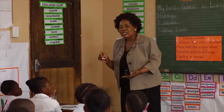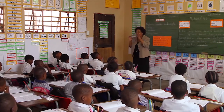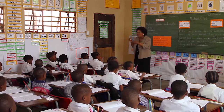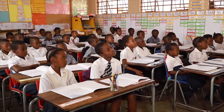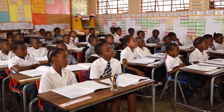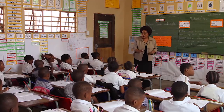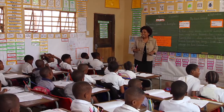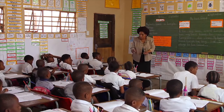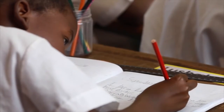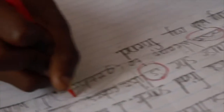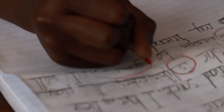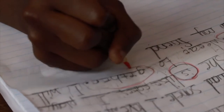You are going to use this wall to look at the correct spelling. If you didn't find the word, you sound the word and write it on top. You are going to correct your friend's mistake. If it is a capital letter, you circle it. If it is a full stop, you put a circle. If it is a name, you put a circle. If it is a spelling mistake, you put a circle and try to write the correct one.